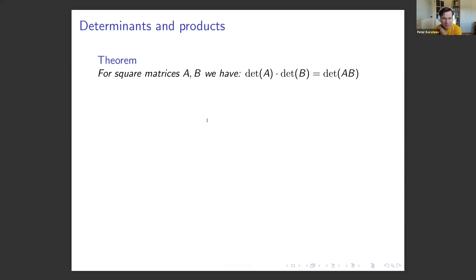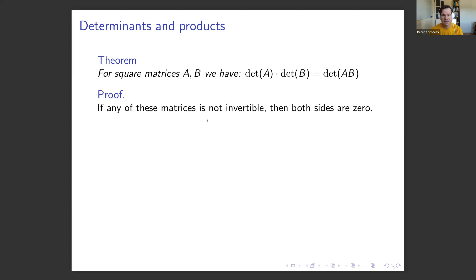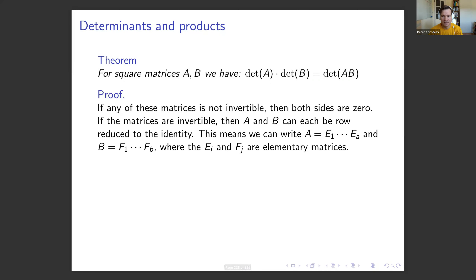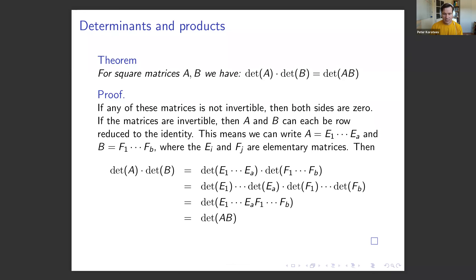Finally, determinants and products: if A and B are any two square matrices, then det(A) times det(B) equals det(AB). If either matrix is not invertible, both sides are zero. If the matrices are invertible, A and B can each be row-reduced to the identity, written as products of elementary matrices. Composing those products and using the fact that the determinant of a product of elementary matrices equals the product of determinants, it follows that det(A) times det(B) equals det(AB).